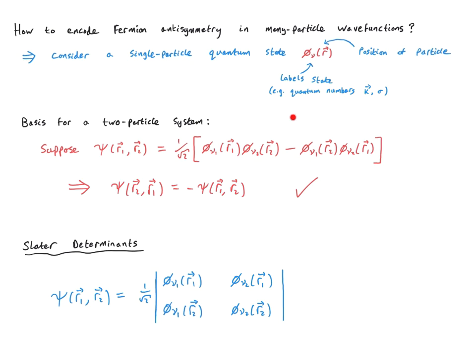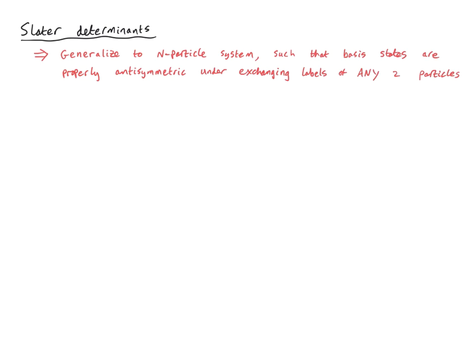However, the problem of properly symmetrizing our basis states becomes very, very complicated the more particles we add. One solution to this problem is to use so-called Slater determinants — to write our fermionic wave functions in terms of determinants of the single-particle states. In the two-particle case, we can see that our antisymmetrized basis state can actually be written as a determinant with normalization 1 over root 2, comprising all possible permutations of the orbitals and particle positions. When we expand out this determinant, we take this diagonal minus the other diagonal, and that's precisely our expression for psi(r1, r2).